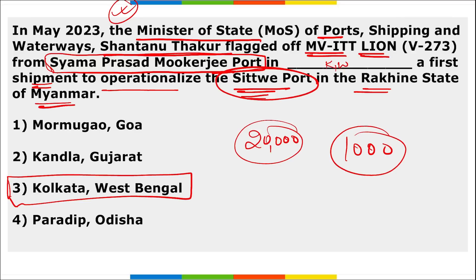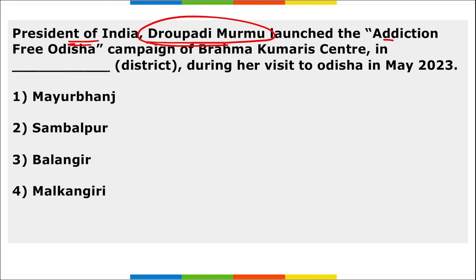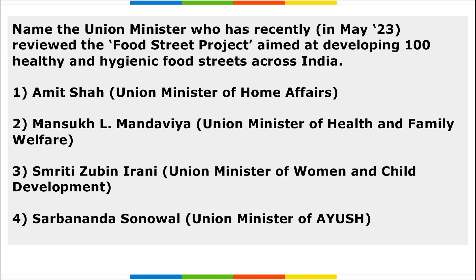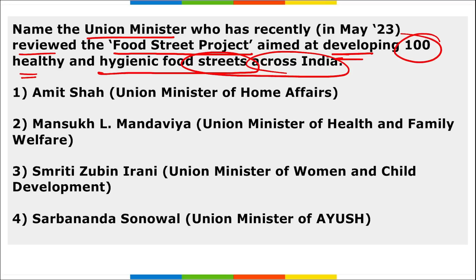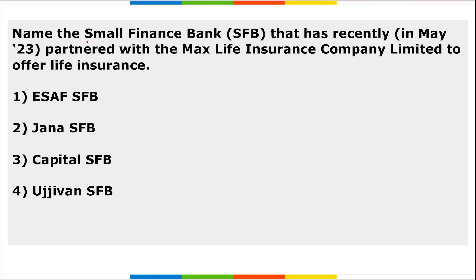President of India Droupadi Murmu launched the 'Addiction Free Odisha' campaign from a Brahma Kumari Centre in the Mayurbhanj district of Odisha. Union Minister Mansukh Mandaviya reviewed the Food Street project, aimed at developing 100 healthy and hygienic food streets across India to promote tourism.